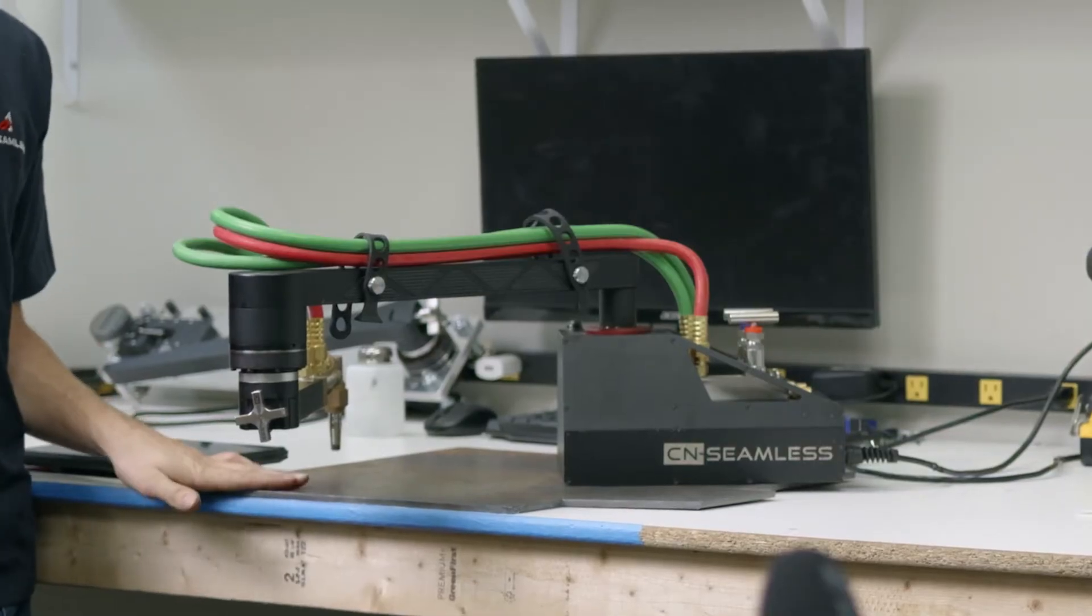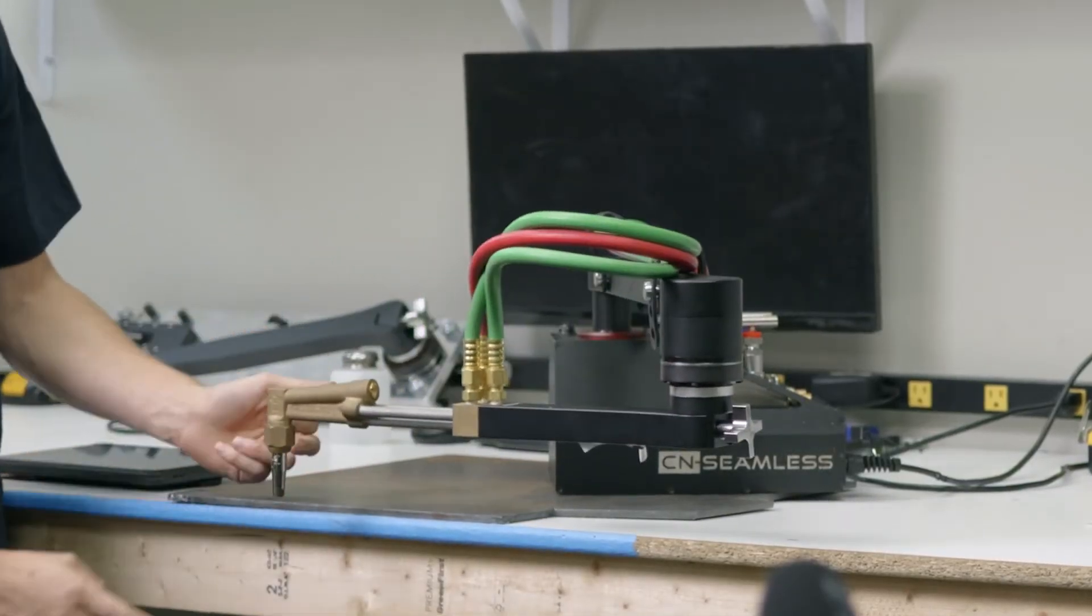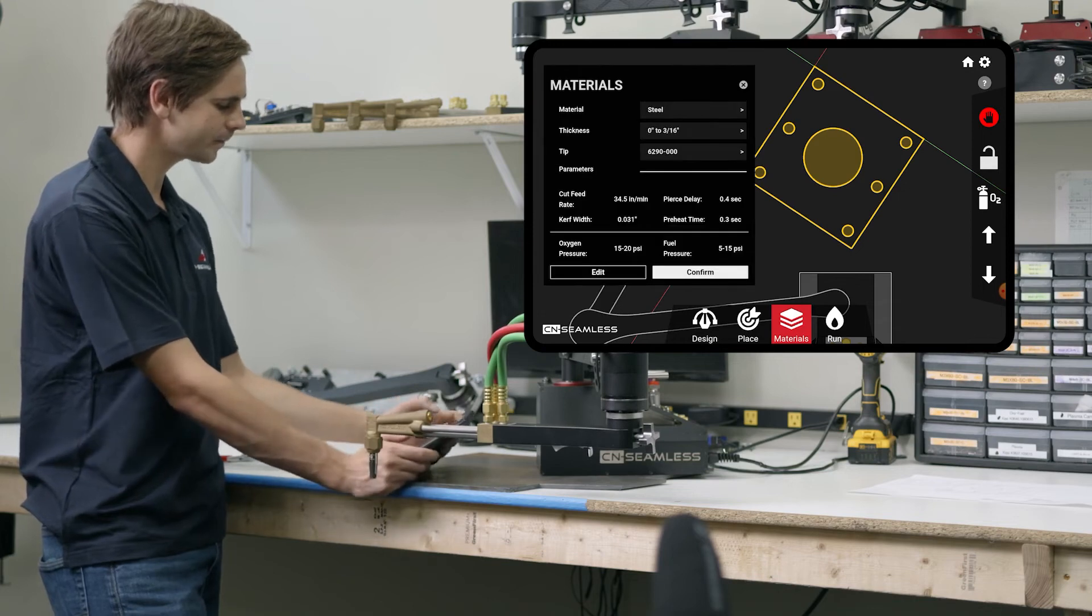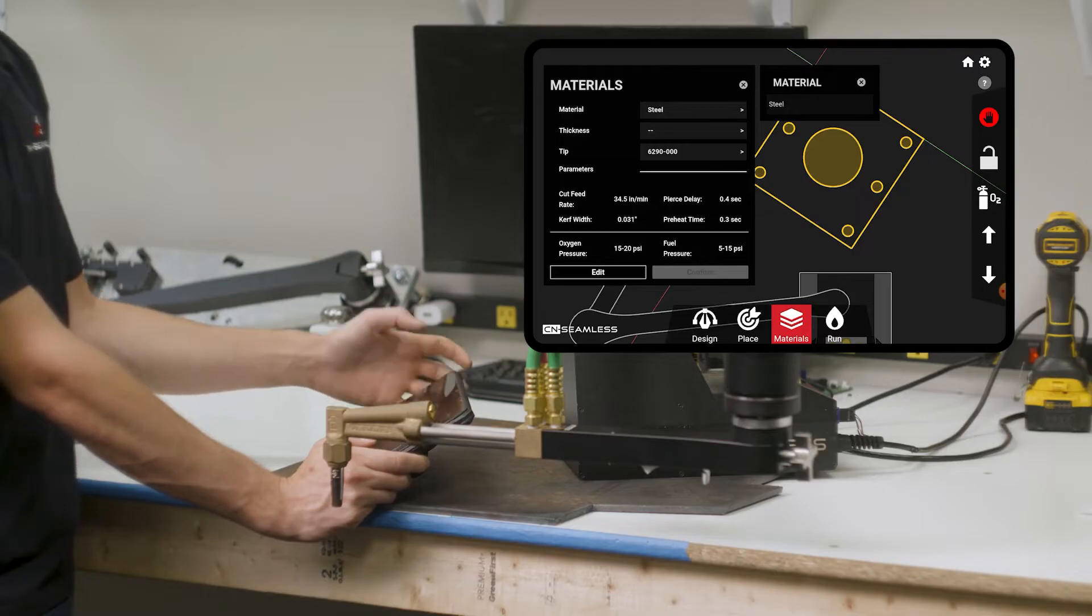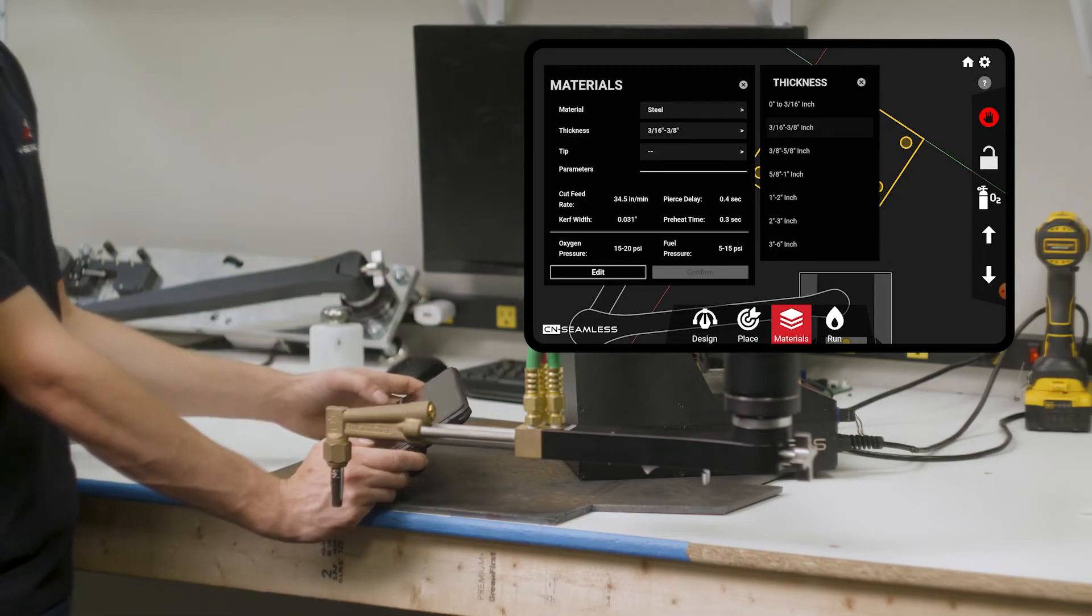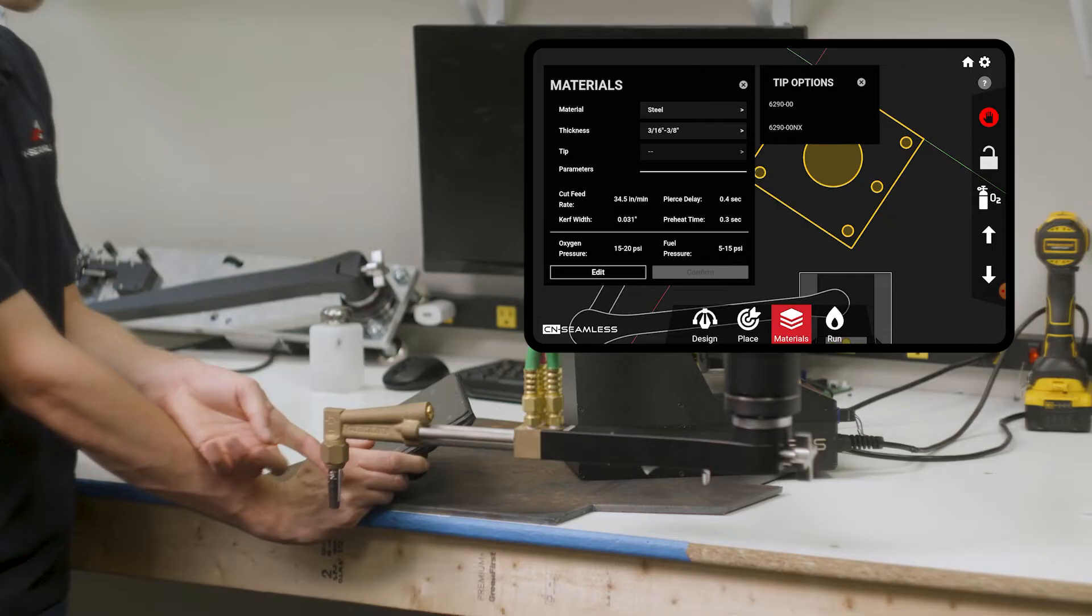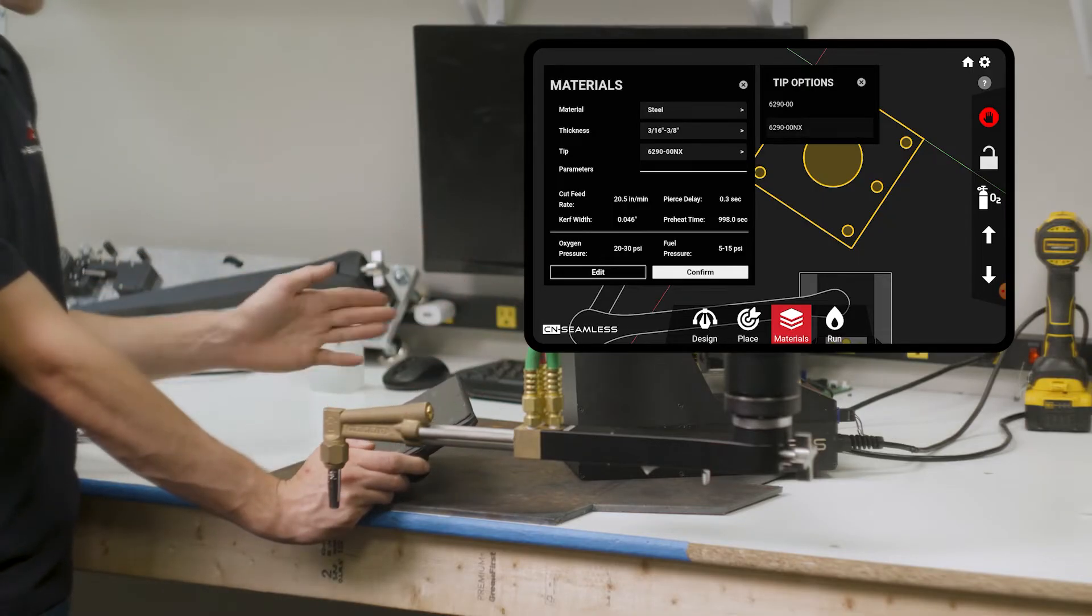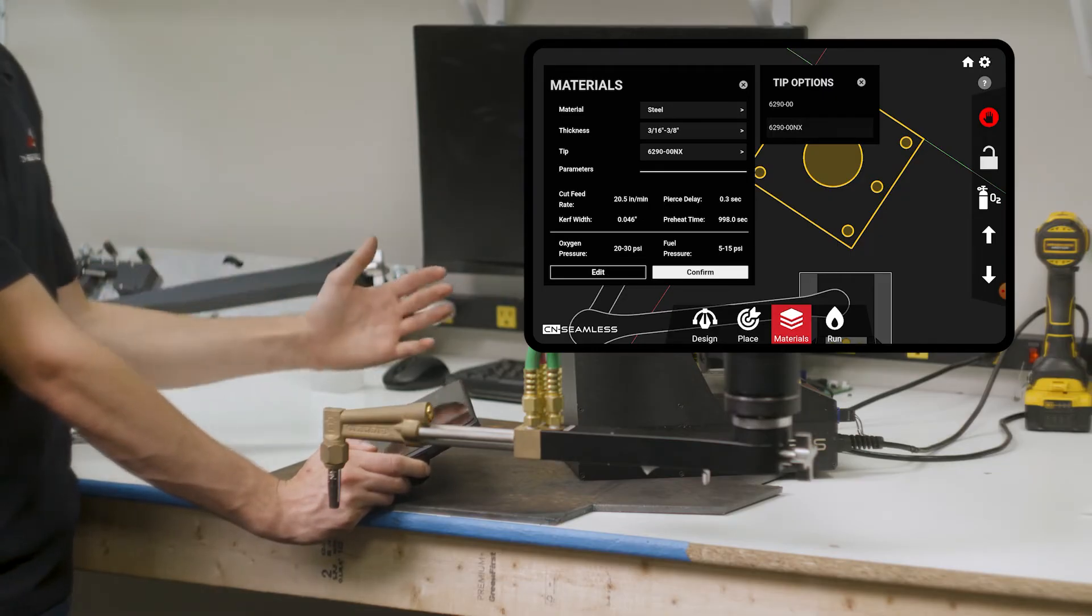The machine right now does not know what you're cutting. So we're going to go and tell the machine what this material is. And then we're also going to tell it what tip we put on here. So how I'm going to do that is press this materials pane right here. What we're going to do is change the material. Steel is still good. And then the thickness now is, this is quarter inch, that's going to be the range of 3/16 to 3/8. And the tip we're using is a double lot. That's what I put on the torch. And this is a propane tip, which is the NX type. So we're going to click 00 NX. And that goes ahead and pulls in all of our cut settings, cut parameters. And that's going to give us a nice clean cut.